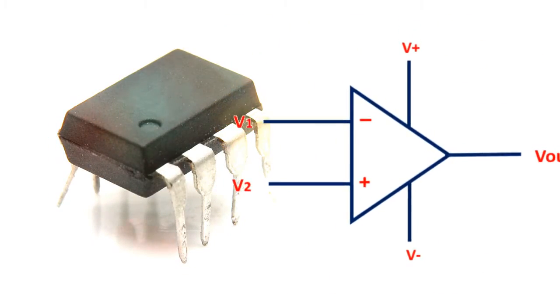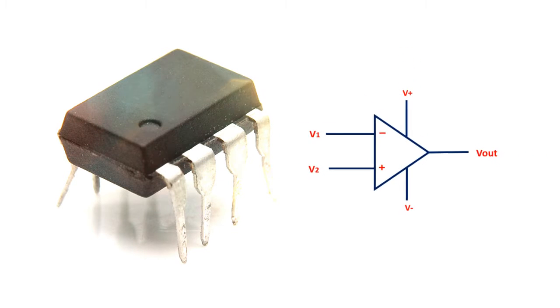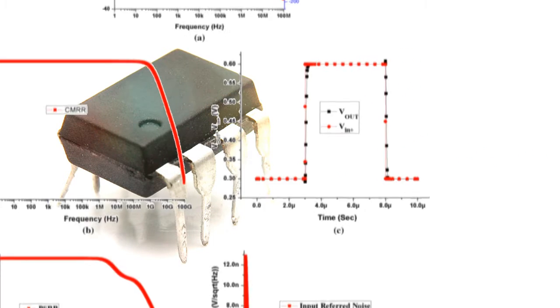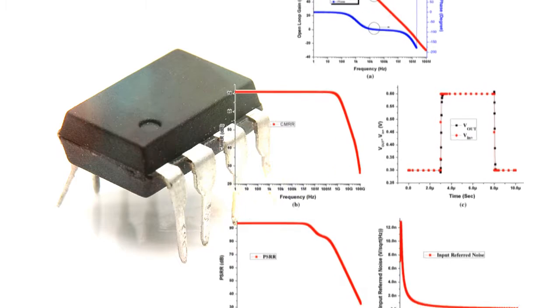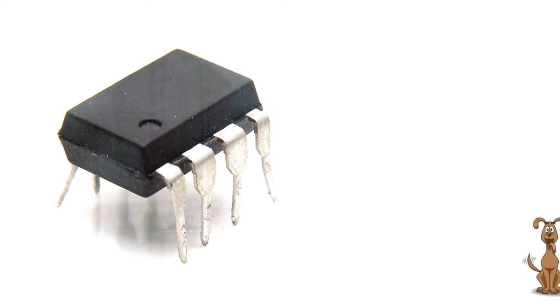Operational amplifiers, op-amps, are linear devices that have all the characteristics required for nearly ideal DC amplification and are therefore widely used in signal conditioning,